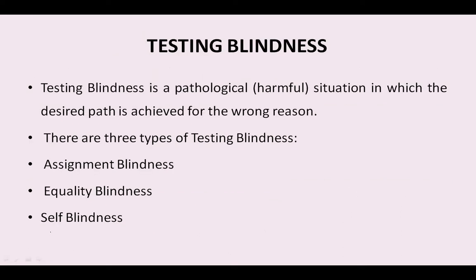Here we are going to talk about testing blindness. What is the meaning of testing blindness? Testing blindness is often regarded as a very vulnerable, pathological, or harmful situation in which whatever path we desired is not correctly justified, but the path is achieved for the wrong reason. Without any correct reason, we are going to the right path — that is called testing blindness. It is often regarded as a pathological, harmful, or unwanted situation. Testing blindness is designed into three different types: assignment blindness, equality blindness, and self blindness.